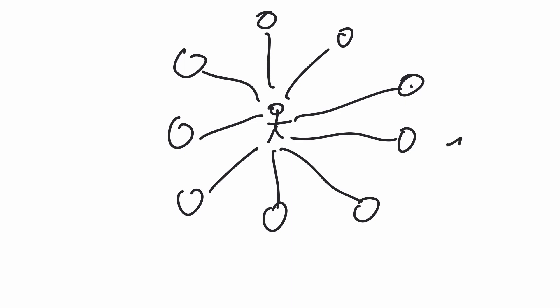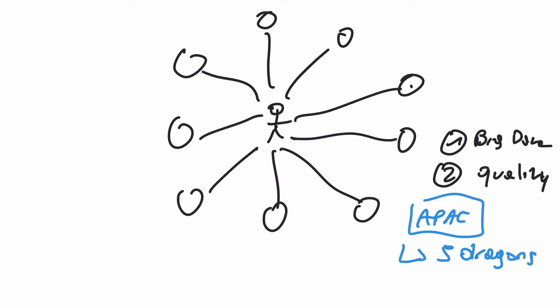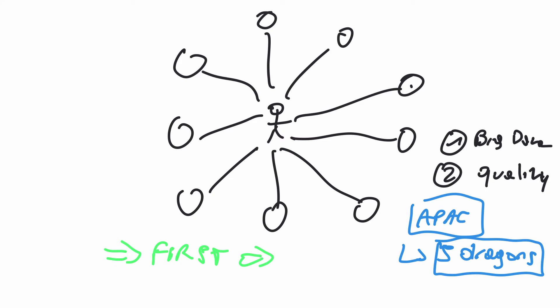After I built this network, I realized my goal: number one was to have a big database, and number two was to have quality data. In one of the companies I worked for, we had a tool from the APAC — Asia Pacific — team, and they called it 'Five Dragons.' A lot of the features from that tool I decided to use for myself and add my own twist. This is where I created the first tool that made everything possible — the reason why I'm here today.